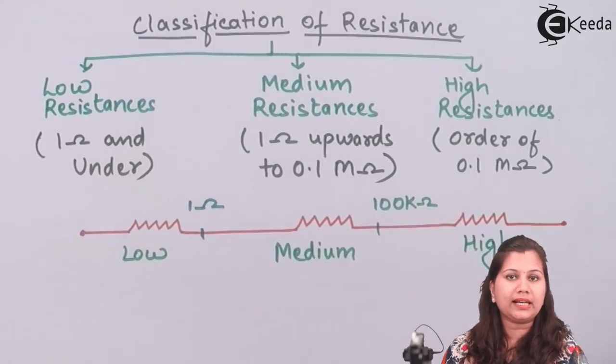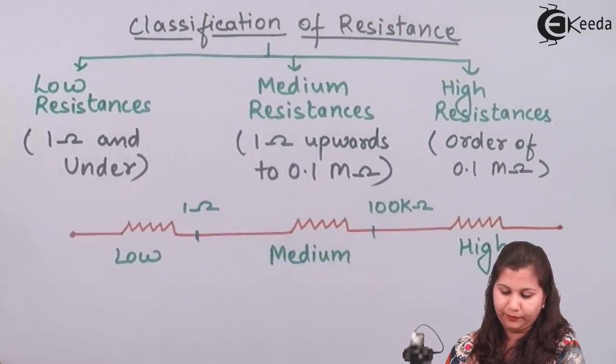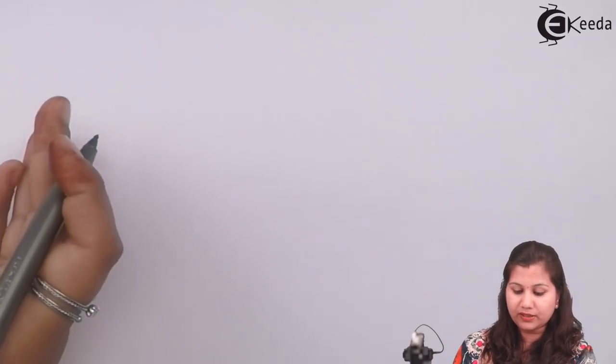In this way we can classify resistances. Examples of low resistances include the resistance of connecting leads between circuits, and also the resistance of a transformer, which has a value in the range of a few ohms.